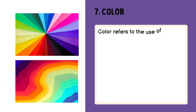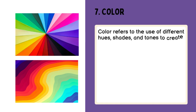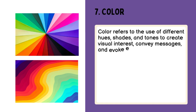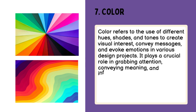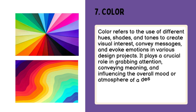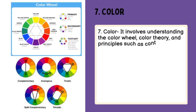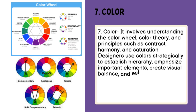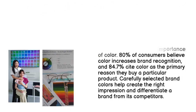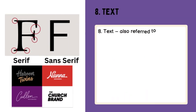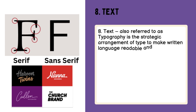Color refers to the use of different hues, shades, and tones to create visual interest, convey messages, and evoke emotions in various design projects. It plays a crucial role in grabbing attention, conveying meaning, and influencing the overall mood or atmosphere of a design. Text, also referred to as typography, is the strategic arrangement of type to make written language readable and visually appealing.